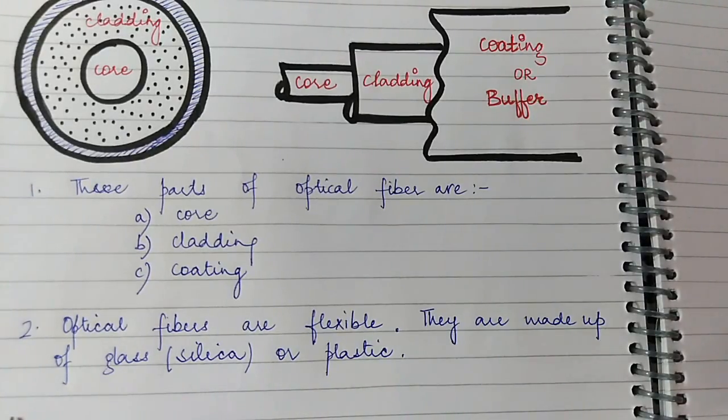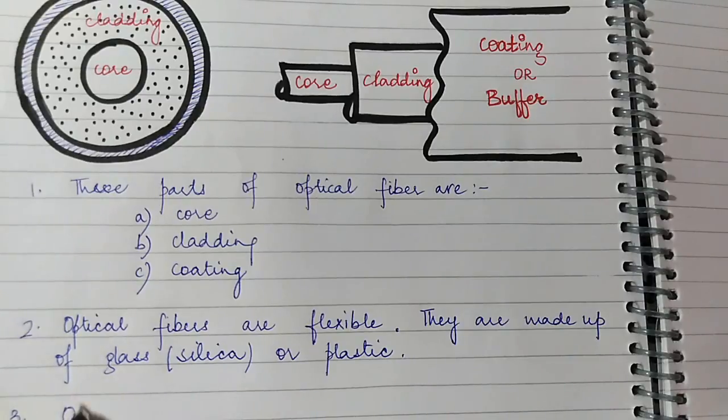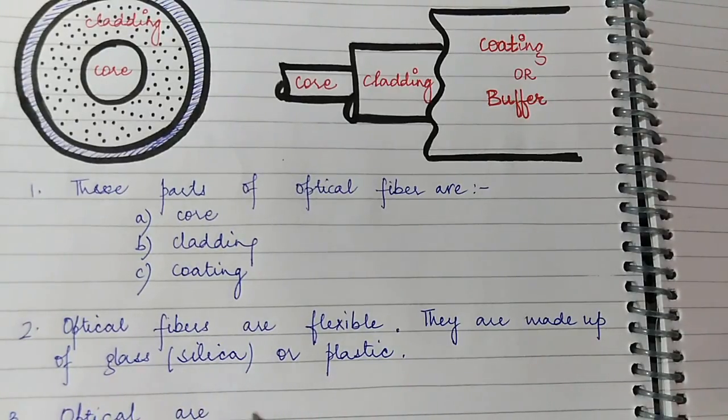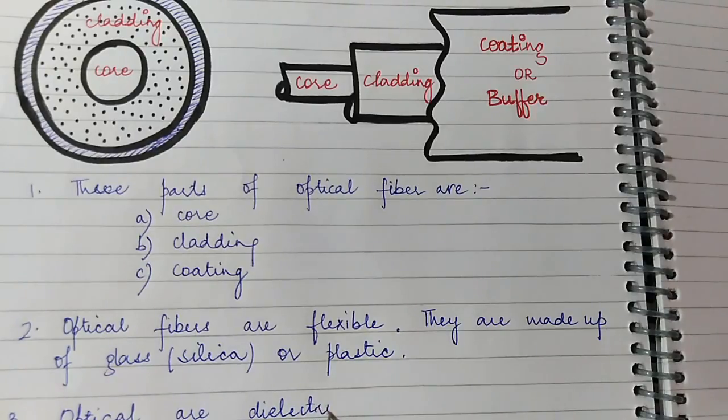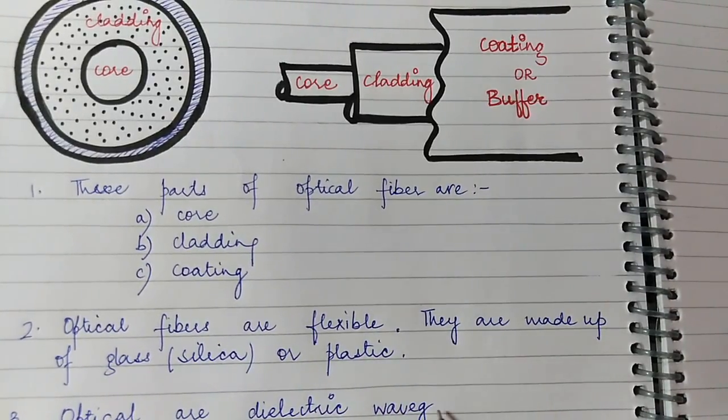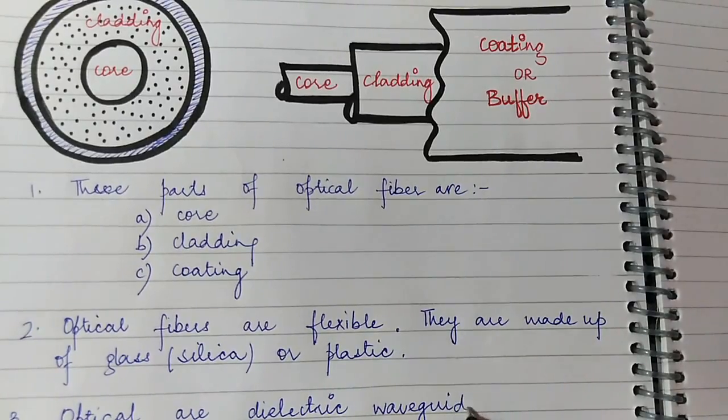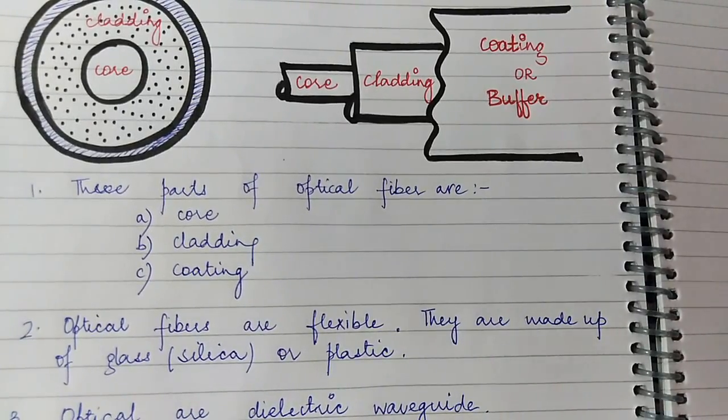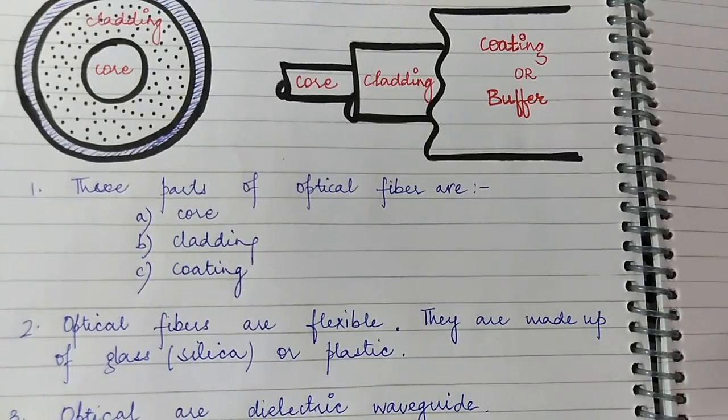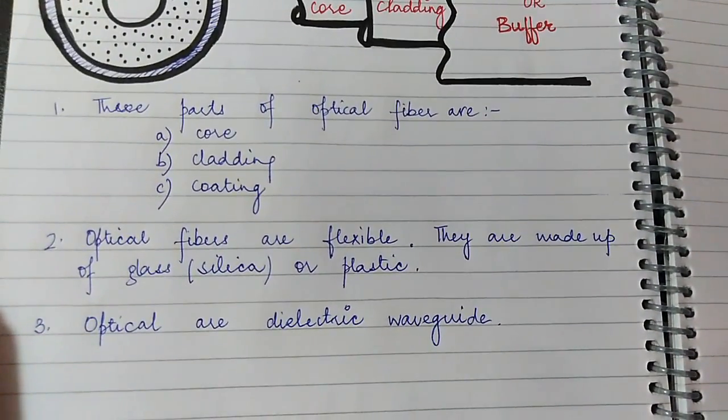The third point for the optical fiber is that they are dielectric waveguides. So I will be explaining what are dielectric waveguides. First of all, we need to understand what is dielectric. Dielectric is a material that conducts no electricity.